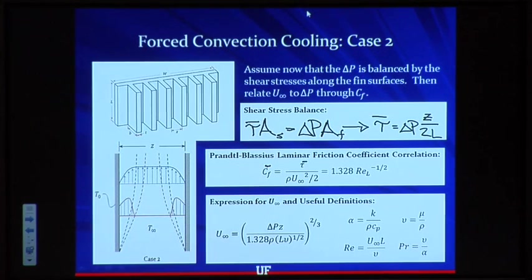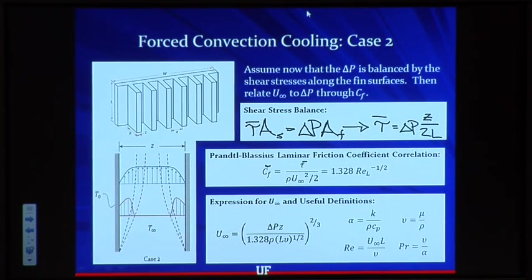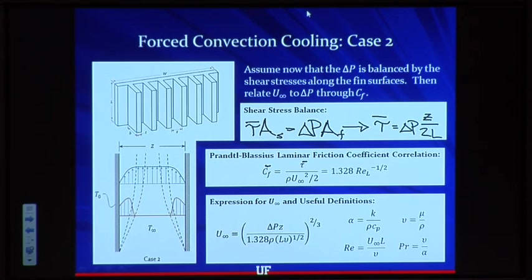Some useful definitions: alpha is the thermal diffusivity, mu is the dynamic viscosity, and we also have the Reynolds number and Prandtl number definitions that we'll use to simplify the final expressions.